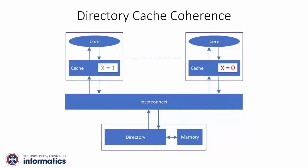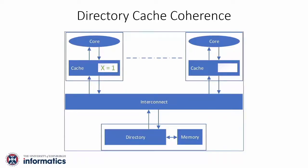On a write, typically what happens today in directory-based protocols is that a message is sent to the directory, the directory then invalidates the other copy, so that when this processor reads, it does not see the stale value. That is how cache coherence operates.